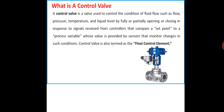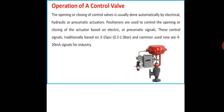The controller generates a signal by comparing the set point with the measured signal sent by the feedback system. The feedback system is an arrangement of transducers or sensors measuring the actual value and sending it to the comparator. The comparator compares the set point signal with the feedback signal, generates an error, and the controller generates a signal to the control valve accordingly.